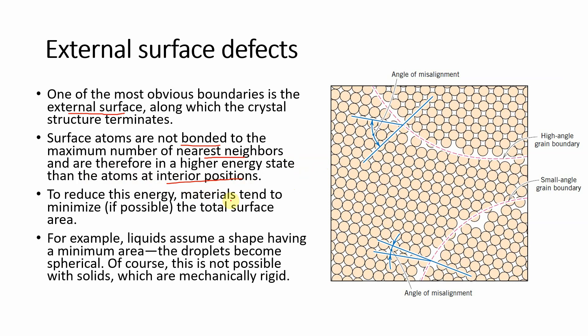To reduce this energy, materials tend to minimize the total surface area. In liquids, the material changes its shape and assumes a spherical form, reducing surface energy — for example, liquid droplets become spherical. However, this is not possible with solids, which are mechanically rigid.